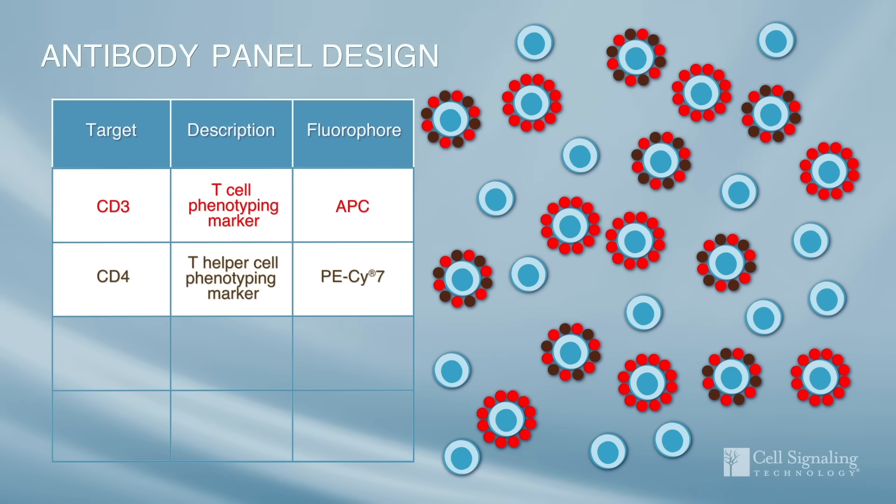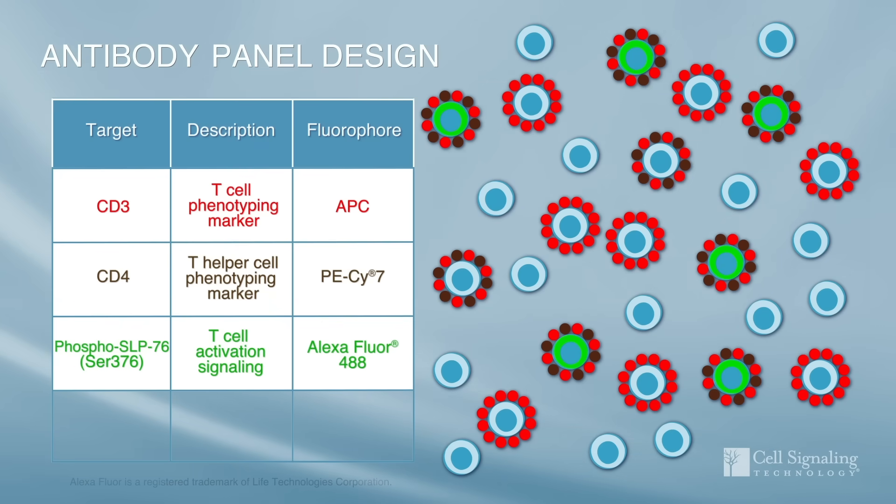Add one or more intracellular targets as readouts for signaling pathway activation, protein expression, or other biological functions. We used a phospho-specific antibody to detect phosphorylation of SLP-76 as a readout of T cell activation.